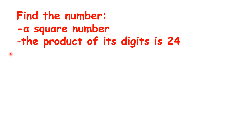Now we're looking for a square number, and the product of its digits is twenty-four. A square number is what you get when you multiply a number by itself. So four is a square number because two times two is four. Nine is a square number because three times three is nine, and so on.